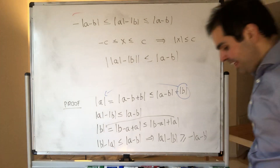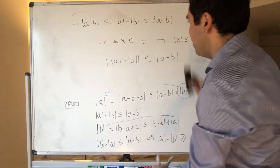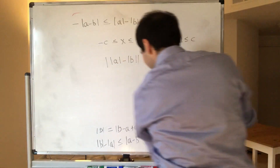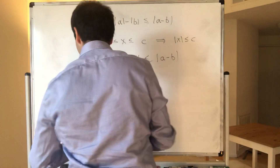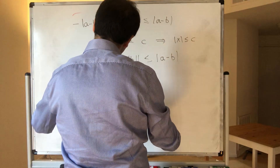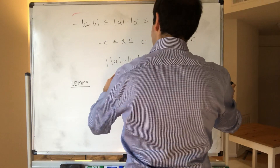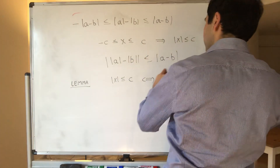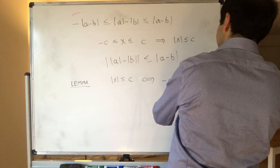And that's it, except let me prove this lemma, because it's actually very useful. In other words, absolute value of x less than or equal to c is actually equivalent to x being between minus c and c.